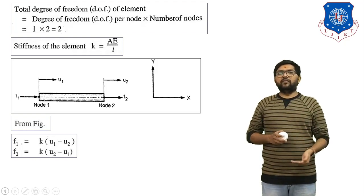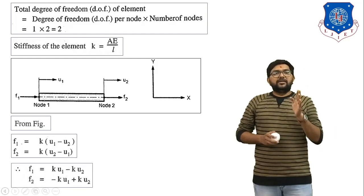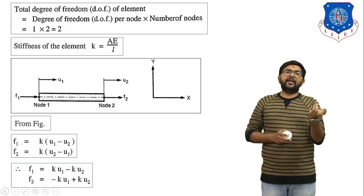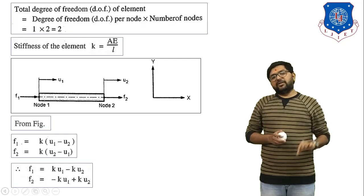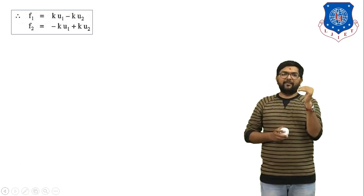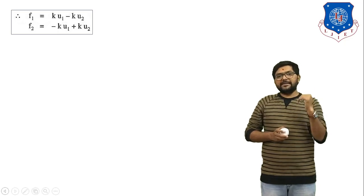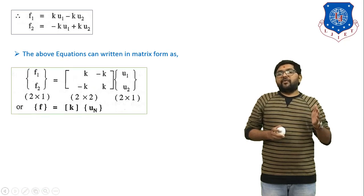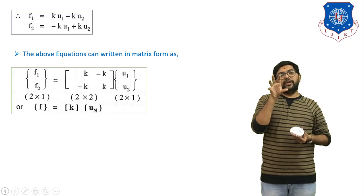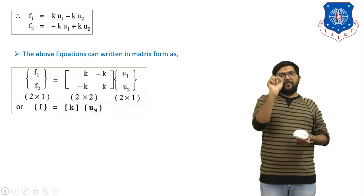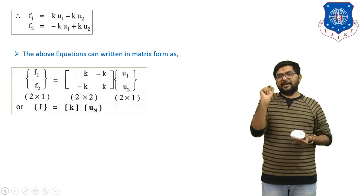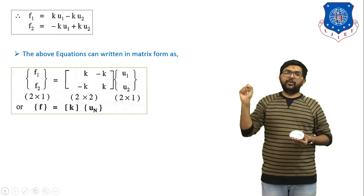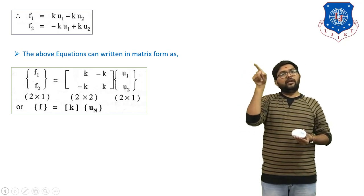We now convert these two equations into matrix form. First, expanding: f1 equals k·u1 minus k·u2, and f2 equals minus k·u1 plus k·u2. The above equations can be written in matrix form as a 2×2 system: {f1, f2} equals [k, -k; -k, k] times {u1, u2}. Multiplying the first row by the column vector gives f1 equals k·u1 minus k·u2, and the second row gives f2 equals minus k·u1 plus k·u2.